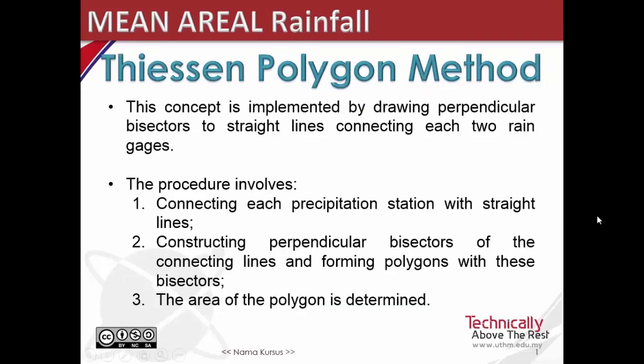Another method for calculating average precipitation is the Thiessen method. This technique has the advantage of being quick to apply for multiple storms because it uses fixed sub-areas. It is based on the hypothesis that for every point in the area, the best estimate of rainfall is the measurement physically closest to the point. This concept is implemented by drawing perpendicular bisectors to straight lines connecting each two neighboring gauges.